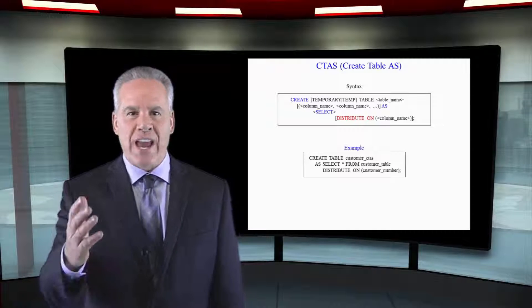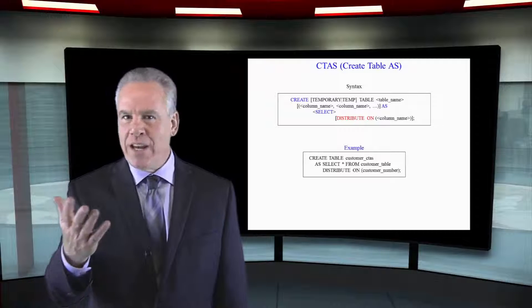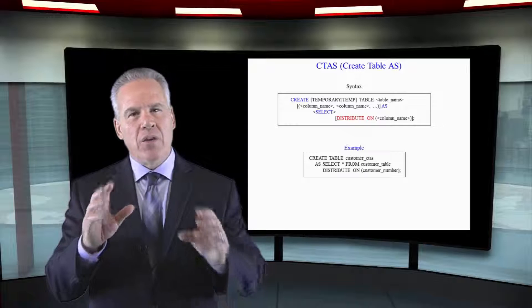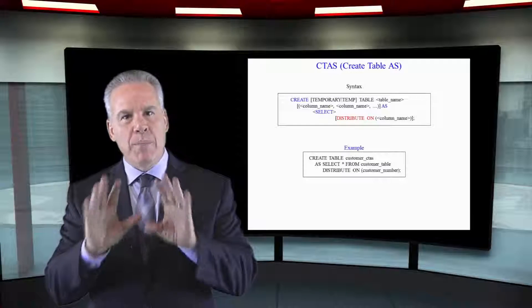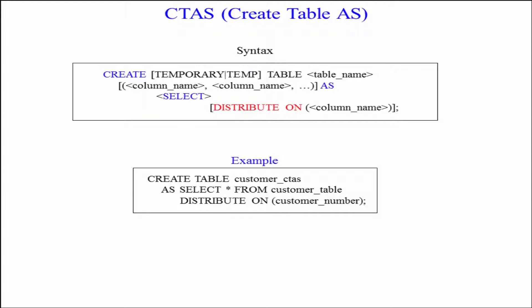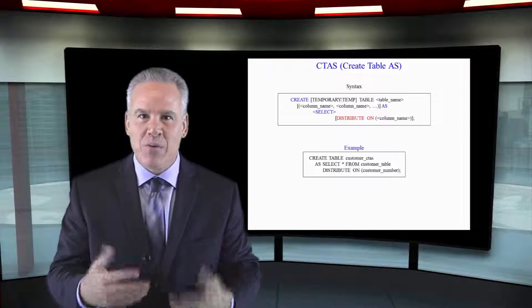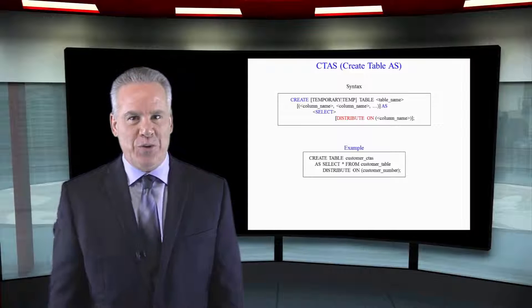We're going to see the syntax for the CTAS, create table as statement. You're able to create a table based on another table. As you can see here, we create table, you give it a table name, as, and then you can select all the columns from another table, you can select some of the columns from another table, and then you can give it a distribution key.